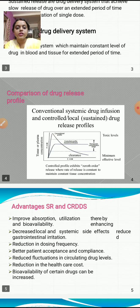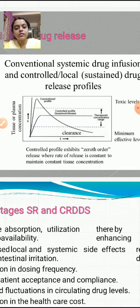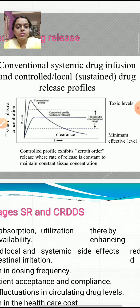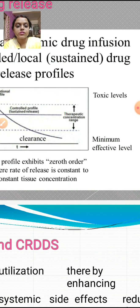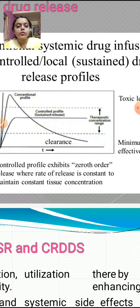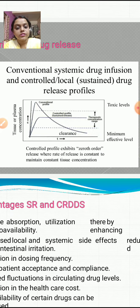The comparison of drug release profiles can be seen in this graph showing conventional systemic drug infusion and controlled local sustained drug release profile. It is a time versus concentration graph where tissue or plasma concentration is on the y-axis. You can see the conventional profile, the controlled or sustained release profile, the therapeutic concentration range, and the toxic levels at the higher end. The controlled profile exhibits zeroth order release, where the rate of release is constant to maintain constant tissue concentration.